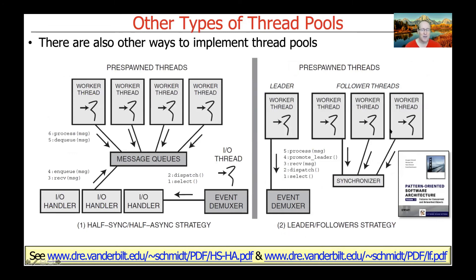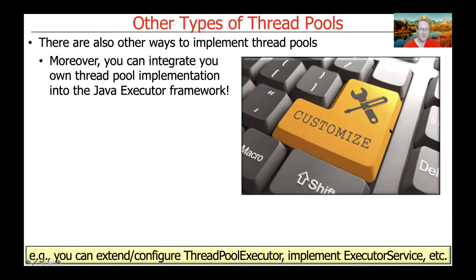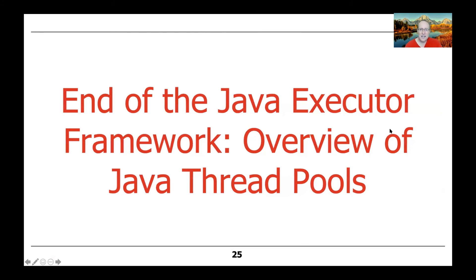Those are the thread pools you get out of the box with Java's executor framework. There are also other patterns like the half-sync/half-async model and the leader-followers model, described in a book the instructor wrote, with links at the bottom of the slide. One of the cool things about Java's executor framework is that if you don't like the built-in thread pools, you can implement your own and integrate it seamlessly with the rest of the framework. We'll spend a fair number of weeks covering all these mechanisms in detail, and you'll get to apply them in upcoming programming assignments.